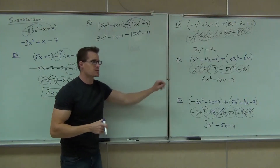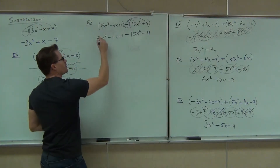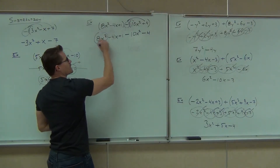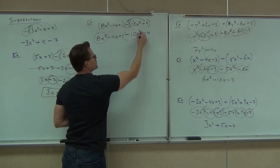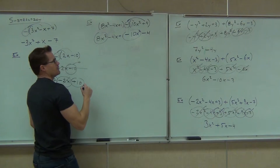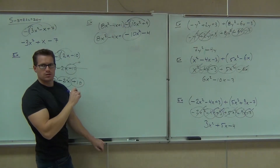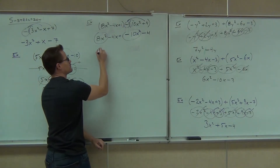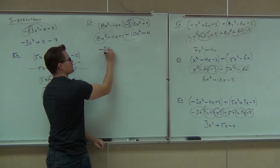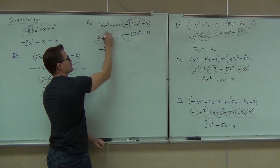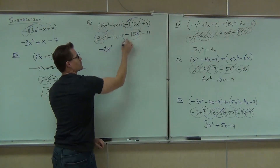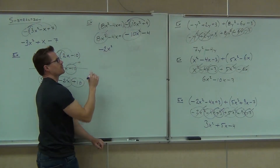That's the addition part after you get rid of your parentheses. Now let's just combine your like terms. Of course, that's going to give us — how much? Negative x. And we definitely don't want to forget about that negative.